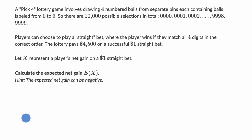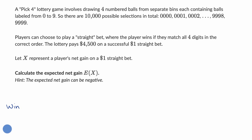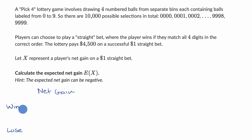There are a couple of ways we can approach this. One way is to just think about the two different outcomes: there's a scenario where you win with your straight bet, and a scenario where you lose. Let's think about the net gain in either one of those scenarios.